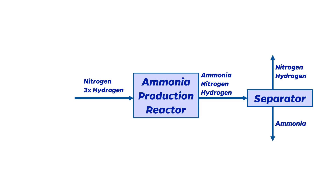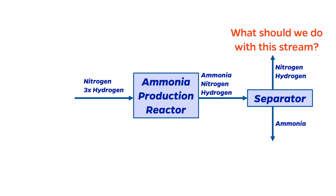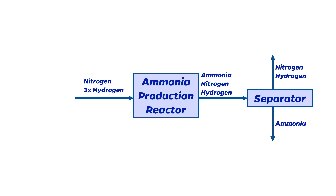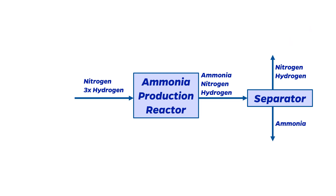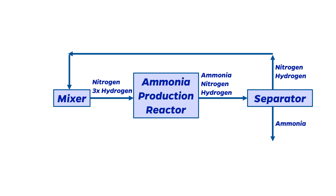Next, being environmentally conscious and economically savvy chemical engineers, let's decide what to do with that stream of nitrogen and hydrogen from the separator. Hydrogen is quite flammable, so we shouldn't release it to the atmosphere. But even if it wasn't, throwing away reactant molecules is wasteful — they're still perfectly good. So we can put a mixer before the reactor and recycle the unreacted reactants. Now we don't have to feed as much fresh reactants to achieve the same feed to the reactor.